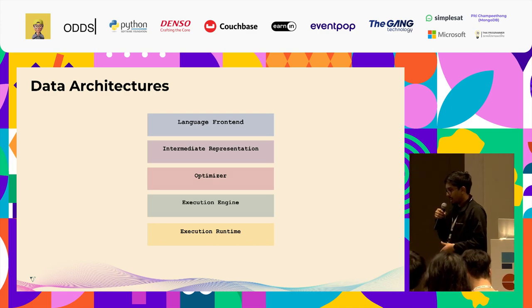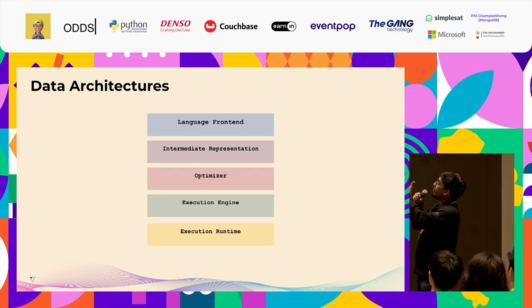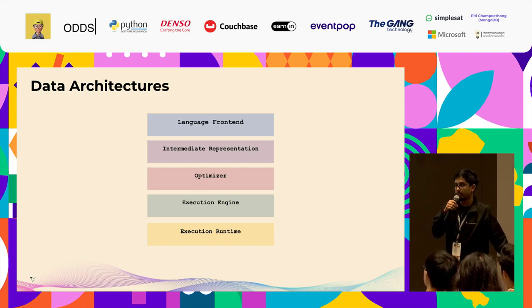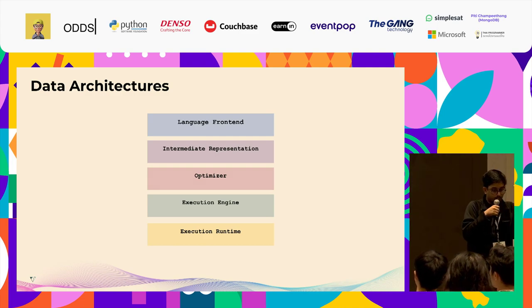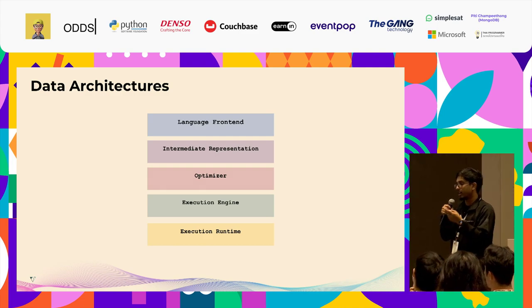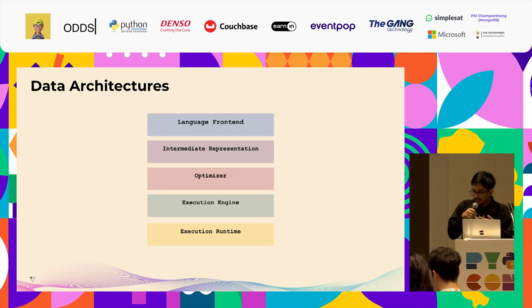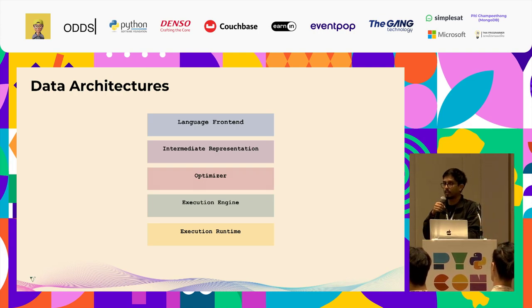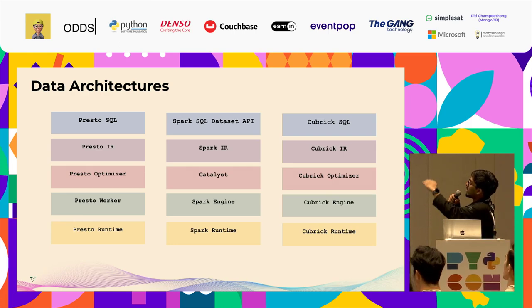If we take a step back and see what these data architectures are basically comprised of — what they're made of, what's the blueprint — they are mostly made up of five layers: a language frontend at the top, an intermediate representation, an optimizer, an execution engine, and the execution runtime. The language frontend takes SQL queries and converts them into its own intermediate representation. The optimizer checks if it can be optimized further, then it goes to the execution engine which prepares it for the execution runtime. This same architecture applies to all kinds of data workloads — analytical, Spark, any kind of data architecture.